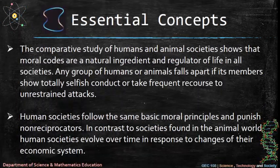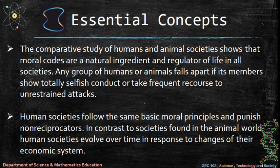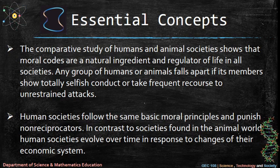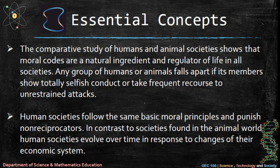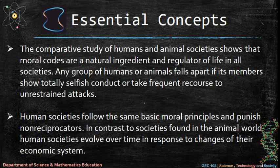The comparative study of humans and animal societies shows that moral codes are a natural ingredient and regulator of life in all societies. Any group of humans or animals falls apart if its members show totally selfish conduct or take frequent recourse to unrestrained attacks. Human societies follow the same basic moral principles and punish non-reciprocators. In contrast to societies found in the animal world, human societies evolve over time in response to changes of their economic system.